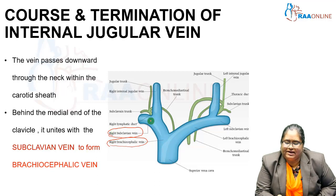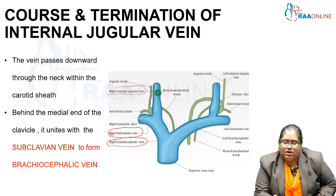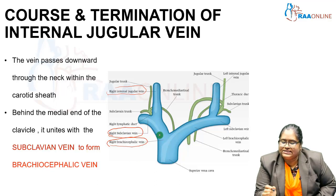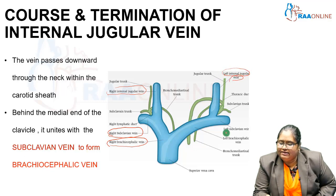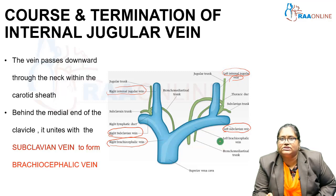The right internal jugular vein unites with the right subclavian vein to form the right brachiocephalic vein. The same applies to the left side: the left internal jugular vein and the left subclavian vein unite to form the left brachiocephalic vein.